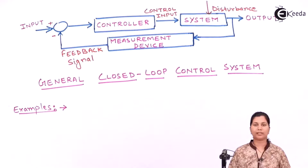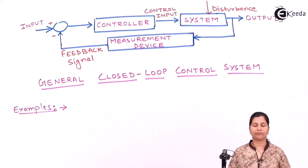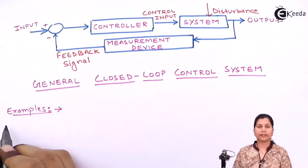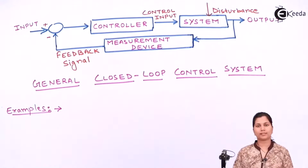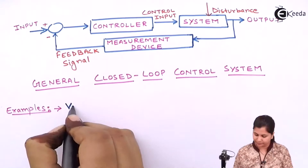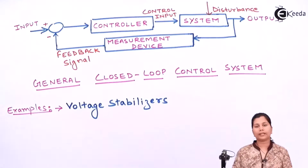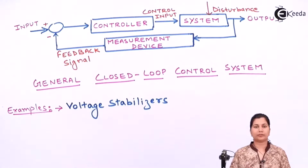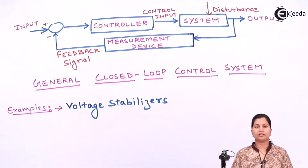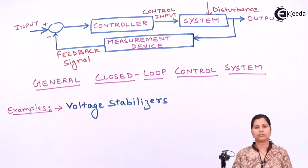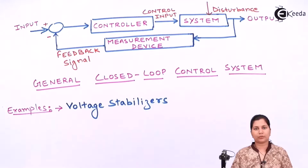The first example of a closed loop control system is voltage stabilizers. Voltage stabilizers are used in the houses of many of us. In voltage stabilizers the voltage is regulated — that is, however much voltage the device needs, that voltage will be provided by the voltage stabilizer. The output is controlled by the input.